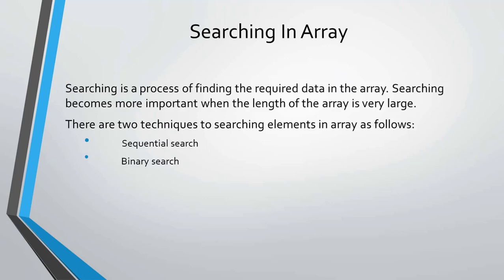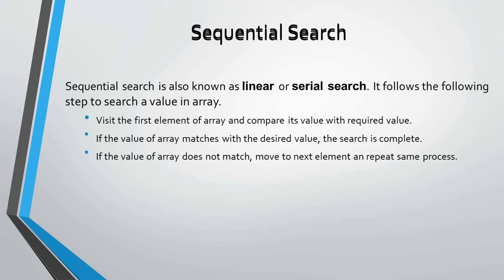Searching in an array is the process of finding the required data in the array. Searching becomes more important when the length of the array is very large. There are two techniques to search elements in an array: sequential search and binary search. Sequential search, also known as linear or serial search, follows certain steps to search for a value in an array.